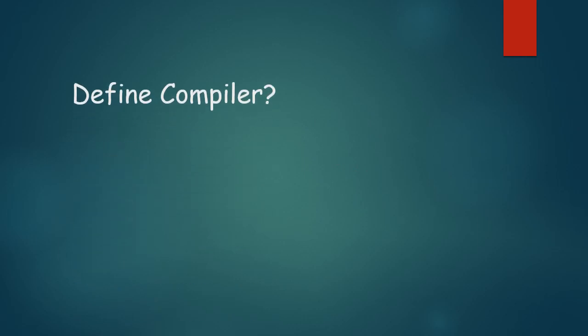Define compiler. To understand a compiler, we must first understand two things: high-level language and machine language. High-level language is a language that is understandable by human beings, while machine language is a language understandable by the computer, which is based on zeros and ones.